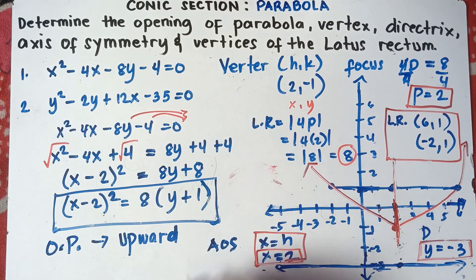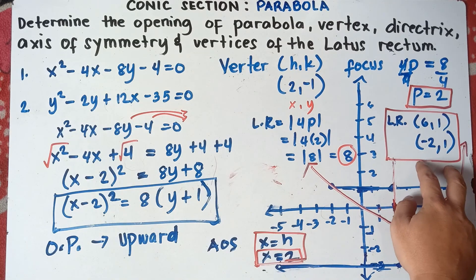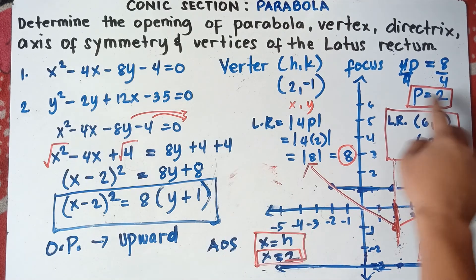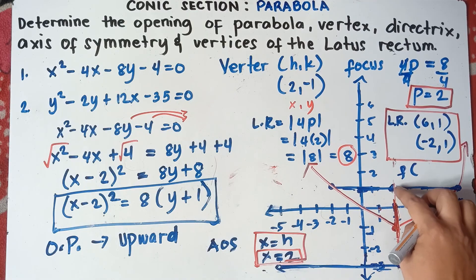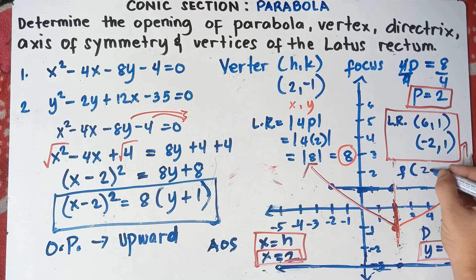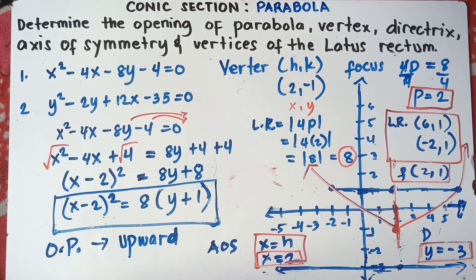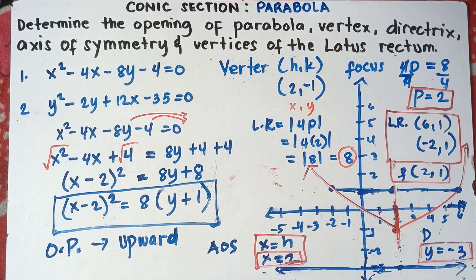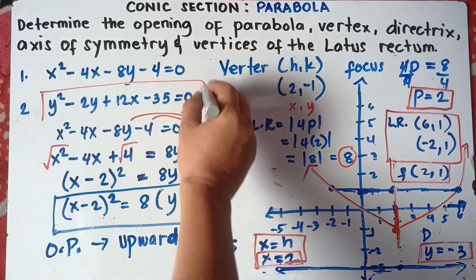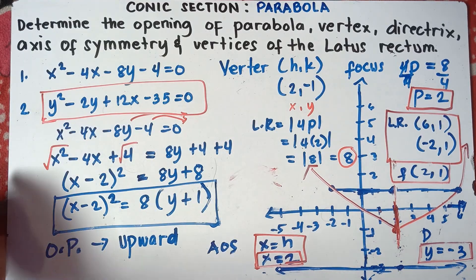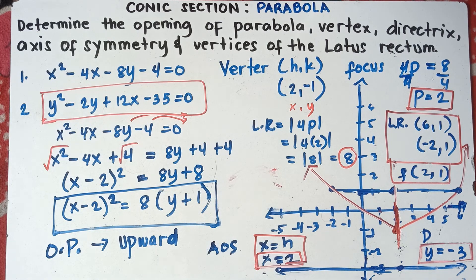So we have: opening of parabola — upward; vertex — (2, negative 1); directrix — Y equals negative 3; axis of symmetry — X equals 2; vertices of the latus rectum — (6, 1) and (negative 2, 1); and the focus is at (2, 1). That's how you solve for all properties of a parabola. I hope this video helps. If it does, don't forget to like, share, and subscribe. The next part will cover number 2 in part 3. This is Teacher MJ. Goodbye for now!